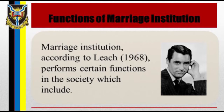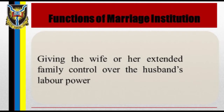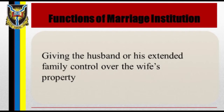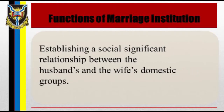The marriage institution, according to Leach (1968), performs certain functions in society, which include: establishing the legal father of a woman's children; establishing the legal mother of a man's children; giving the husband or his extended family control over the wife's sexual services; giving the wife or extended family control over the husband's sexual services; giving the husband or extended family control over the wife's labor power; giving the wife or extended family control over the husband's labor power; giving the husband or extended family control over the wife's property; giving the wife or her extended family control over the husband's property; establishing a joint fund of property for the benefit of the children; and establishing a socially significant relationship between the husband and the wife's domestic groups.